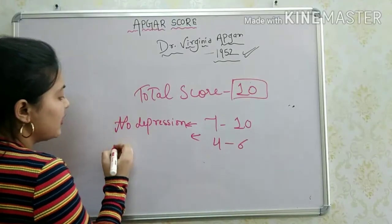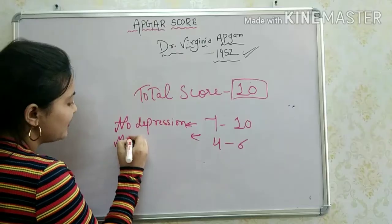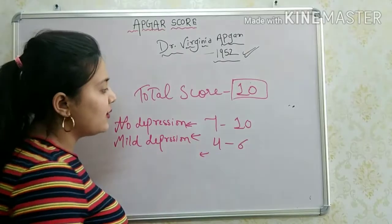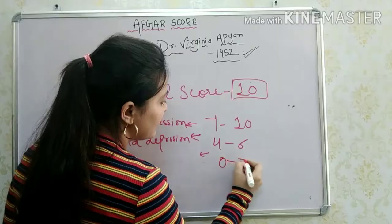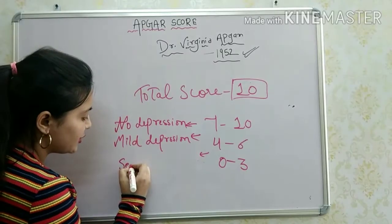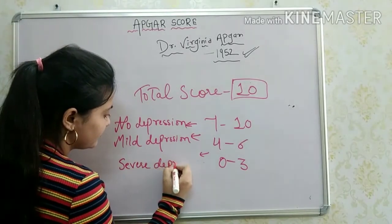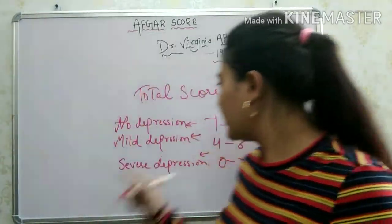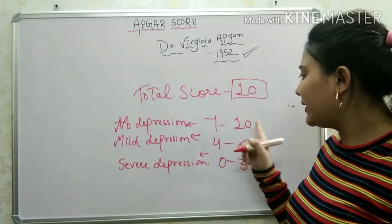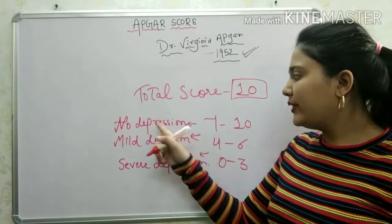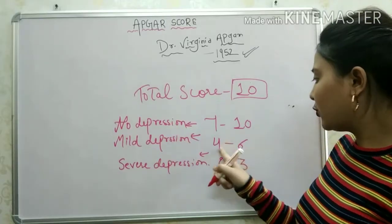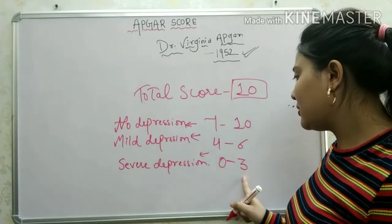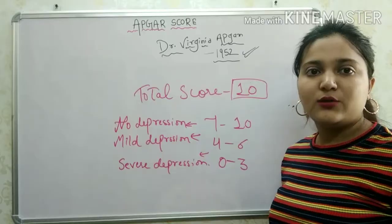If the score is 4 to 6, that indicates mild depression. If the score is 0 to 3, that indicates severe depression.